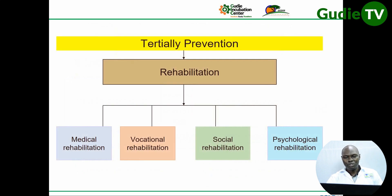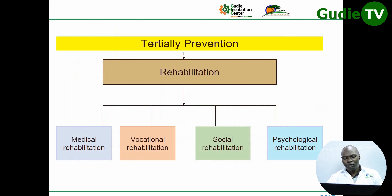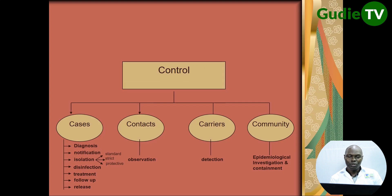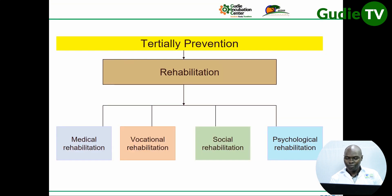Tertiary prevention is essentially about rehabilitation. Vocational rehabilitation involves teaching a person a new skill — for example, someone who suffered an injury and lost their job on a farm could be taught how to produce animal feeds. Other forms include medical rehabilitation, social rehabilitation, and psychological rehabilitation. Secondary prevention is being skipped here, as it primarily involves doctors and nurses offering treatment.